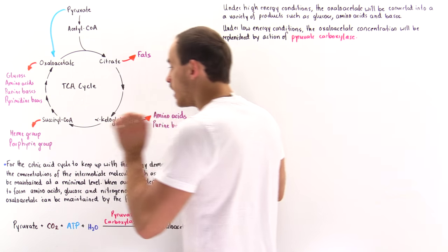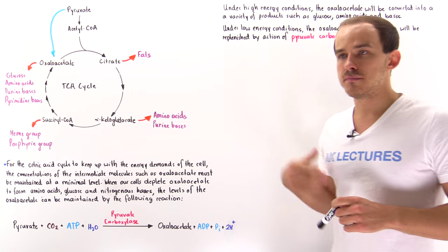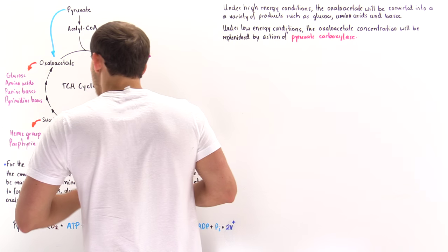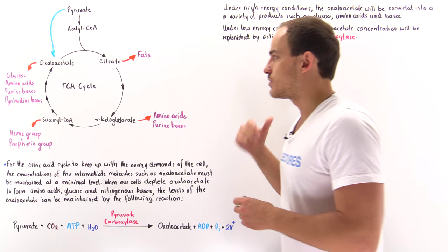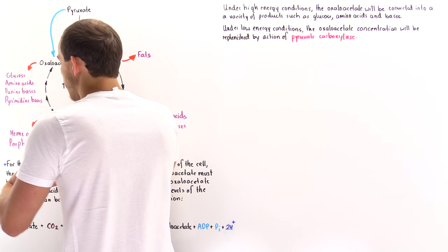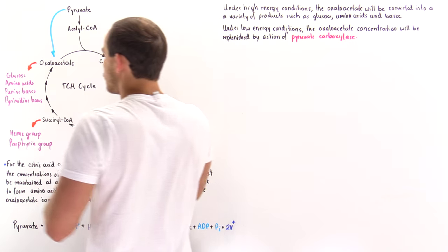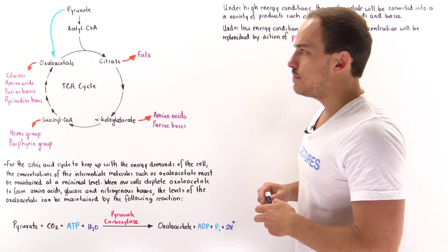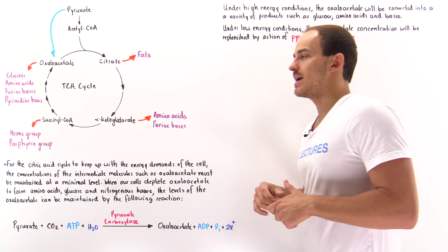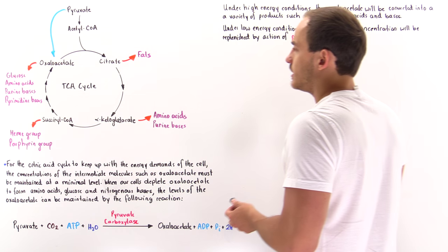Alpha-ketoglutarate, another intermediate of the TCA cycle, can be used to form glutamate amino acids and other amino acids, and we can also form purine nitrogenous bases. Succinyl coenzyme A, a third intermediate of the citric acid cycle, can be used to form heme groups and porphyrin groups — these groups are used by enzymes such as hemoglobin and myoglobin. Oxaloacetate can be used in gluconeogenesis to form glucose molecules, and also to form other amino acids, purine nitrogenous bases, and pyrimidine nitrogenous bases.